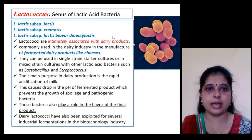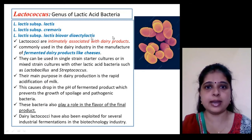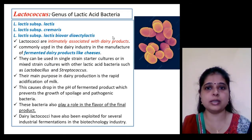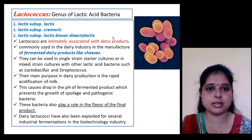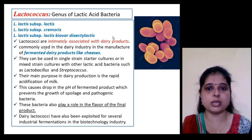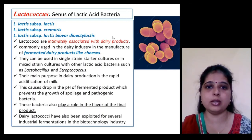Lactococcus is a genus of lactic acid bacteria. There are three strains: lactis, cremoris, and lactis biovar diacetilactis. They are intimately associated with dairy products and commonly used in the dairy industry for the manufacture of fermented dairy products like cheese. The main purpose in dairy production is the rapid acidification of milk — by the drop in pH, growth of spoilage and pathogenic bacteria is minimized. This bacteria also plays a role in the flavor of the final product.